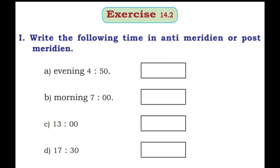Let's see exercise 14.2. First main: Write the following time in anti meridian or post meridian. First one: Evening 4:50 — evening means post meridian, so write PM. B: Morning 7 — AM. 13 hours: after 12 so write PM. 17:30 — afternoon, after 12, so write PM.